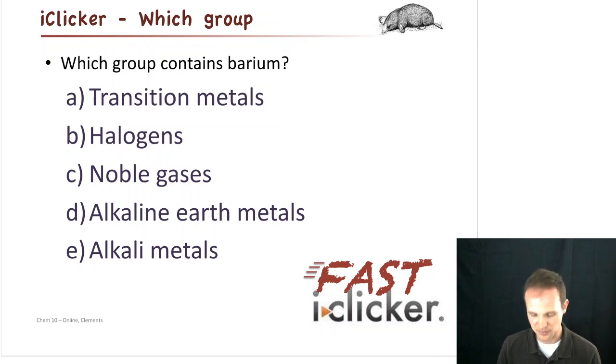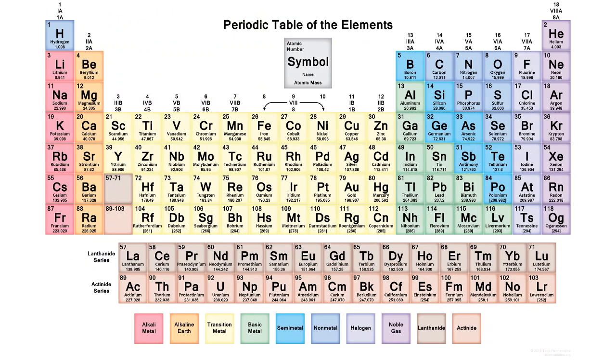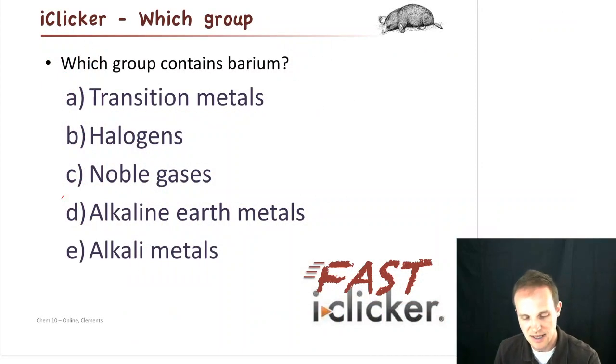So what did you come up with? Well, if we go over to the periodic table and we look down there, we find BA for barium. It's the orange one. It's in group two. And if you remember what group two was called, it is the alkaline earth metal. So hopefully you came up with D. All right, moving on.